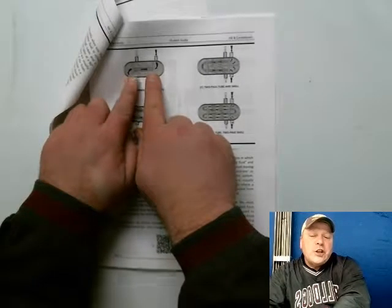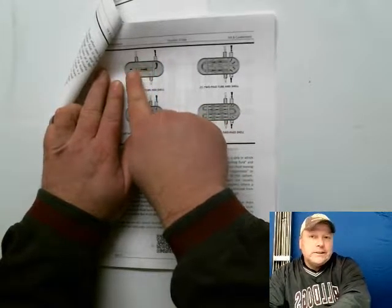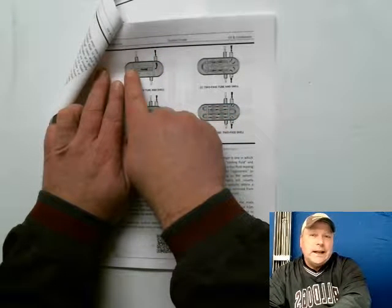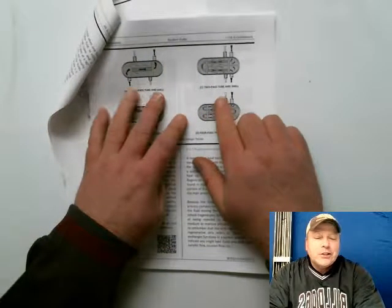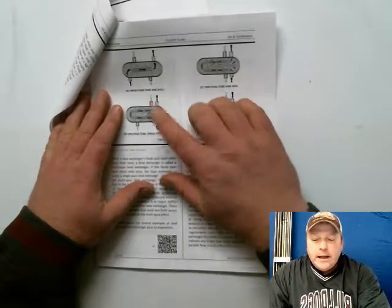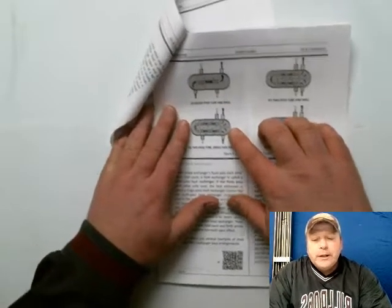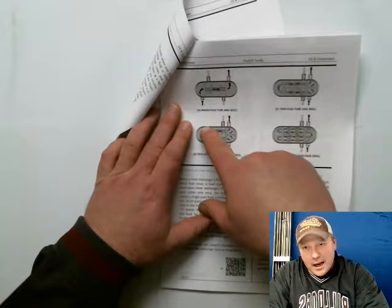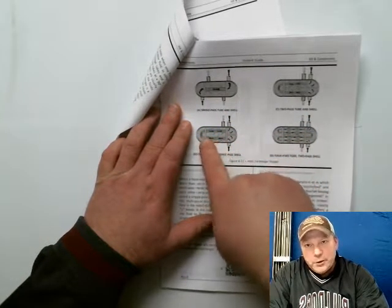So the shell side could travel once, once it enters and exits, and the tube side could enter once and exit. Now, by the very nature of a U-tube, if you look here, the actual tube side, you pass one time the length of the tubes, then you come around and you pass again.